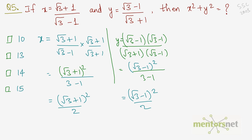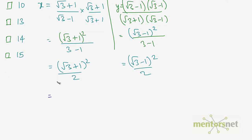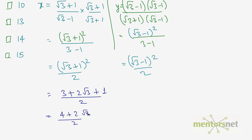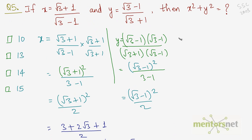Expanding x: (√3 + 1)² = (√3)² + 2·√3·1 + 1² = 3 + 2√3 + 1 = 4 + 2√3. Dividing by 2 gives (4 + 2√3)/2 = 2 + √3. So x = 2 + √3.